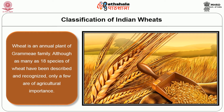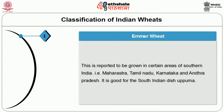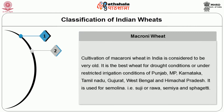Coming to the classification of Indian wheats, wheat is an annual plant of the Gramineae family. Although as many as 18 species of wheat have been described and recognized, only a few are of agricultural importance. The first one is emmer wheat, which is reported to be grown in certain areas of southern India — Maharashtra, Tamil Nadu, Karnataka and Andhra Pradesh. It is good for the South Indian dish upma.